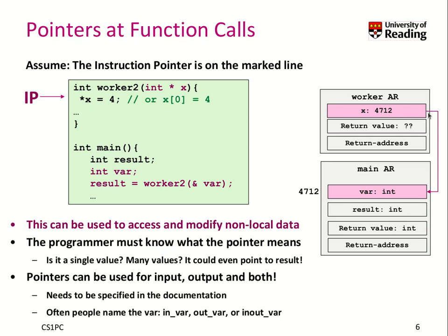Basically, we have now a pointer on the stack in the activation record from the worker2 function pointing to the variable on the main stack. Now, if I change x — in particular, where x points to by using the dereference operator — I want to set wherever x points to to the value 4. I do not change x itself; I change wherever it points to. So I change something in the activation record of the main function. This strategy can be used to access and modify data that is not local to a function, but somewhere in main memory.